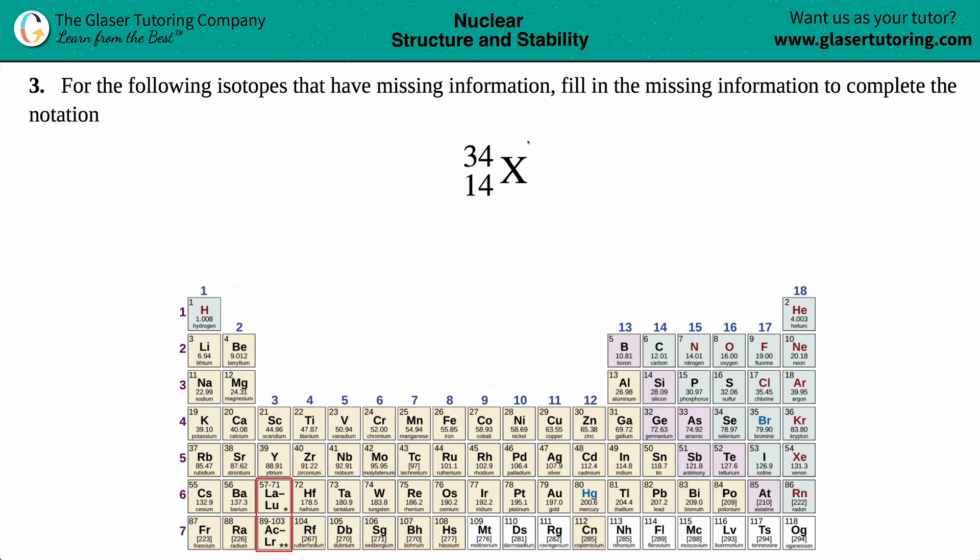If they're giving you this isotope information written like this, where you have a number on the top, the bottom, and a lettering on the side, the right side is always reserved for the elemental lettering.